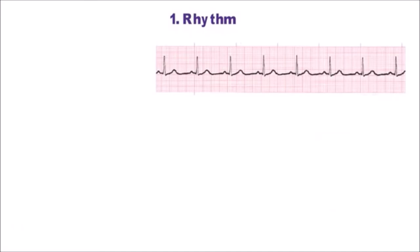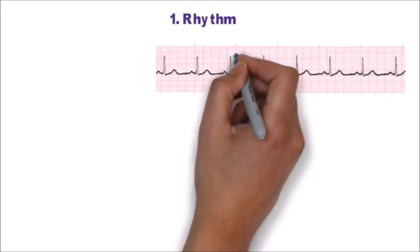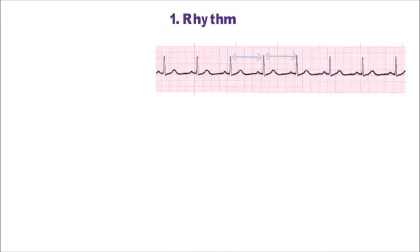Now step 1 is Rhythm. To check the rhythm we check the RR interval. As in this ECG, RR intervals are equal and there is P wave before every QRS complex. So this is a normal sinus rhythm.